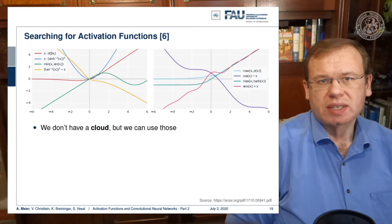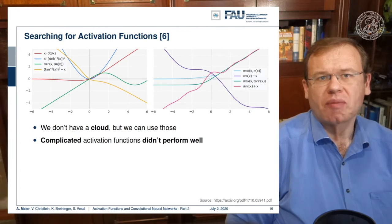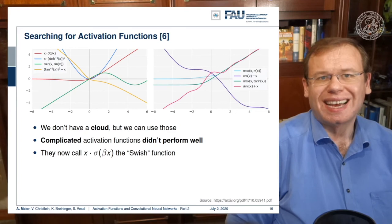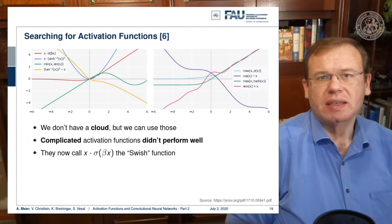One general result that they came up with is that complicated activation functions didn't perform very well. They found something that is x times sigmoid beta x, which they call the swish function. So this seemed to be performing quite well. And actually, this function that they identified in the search has already been proposed before as the sigmoid weighted linear unit.